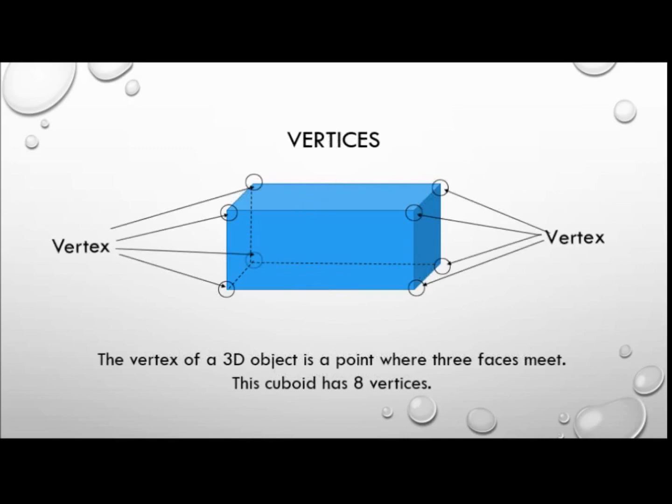The vertex of a three-dimensional object is a point where three faces meet. So this cuboid has eight vertices, seven of which are visible in this diagram but one of them is hidden and I've again used the dotted lines to show where it is.